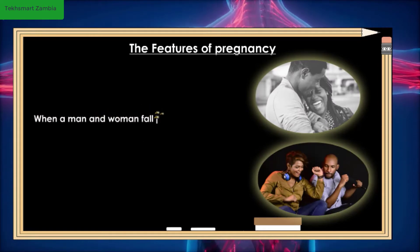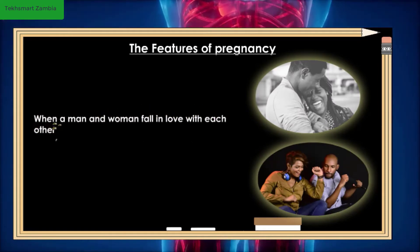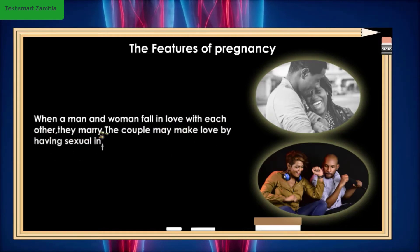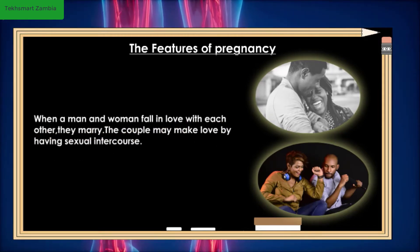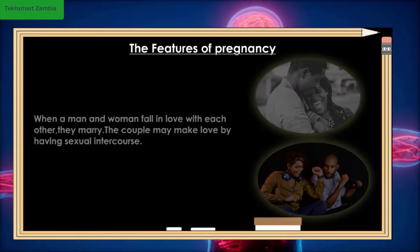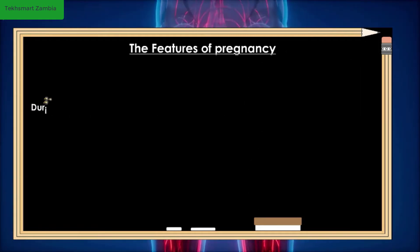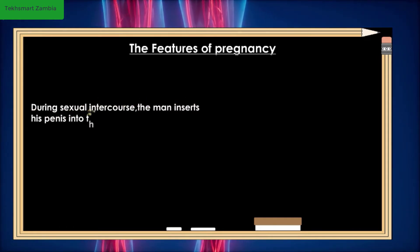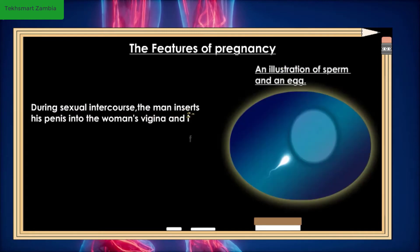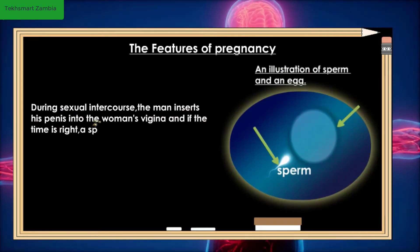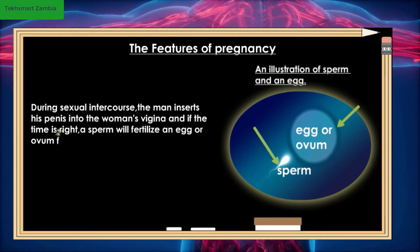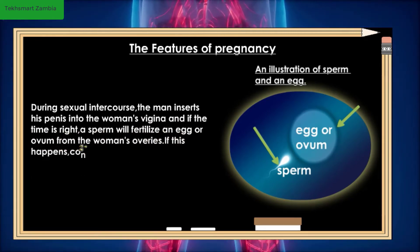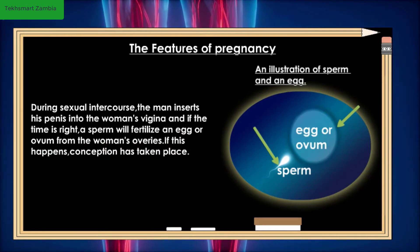When a man and a woman fall in love with each other, they marry. The couple may make love by having sexual intercourse. During sexual intercourse, the man inserts his penis into the woman's vagina, and if the time is right, a sperm will fertilize an egg or ovum from the woman's ovaries. If this happens, conception has taken place.